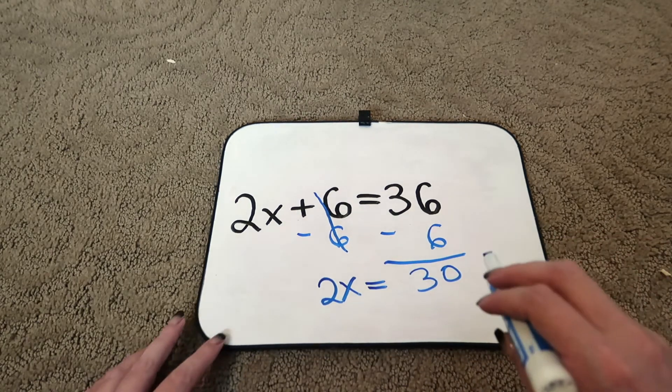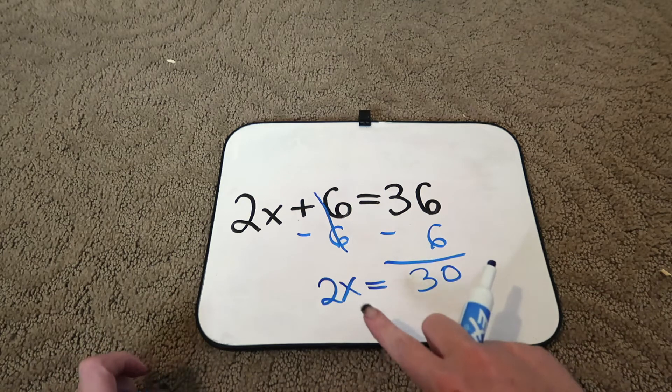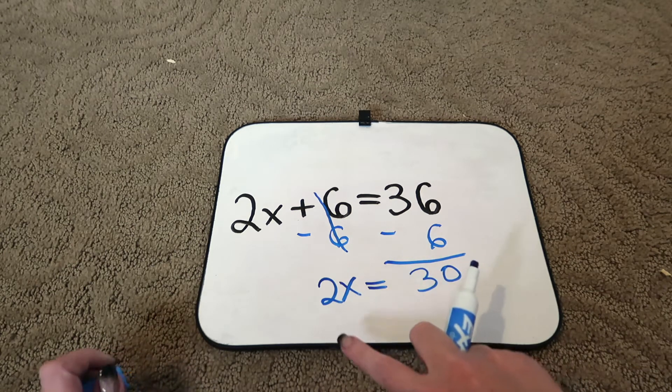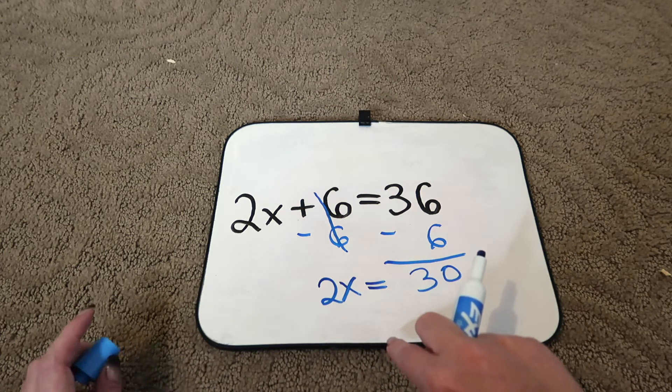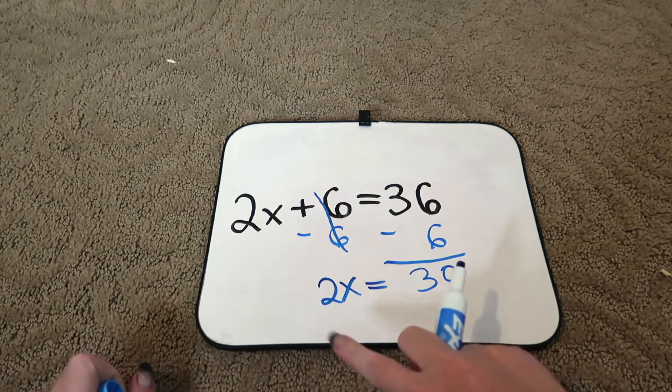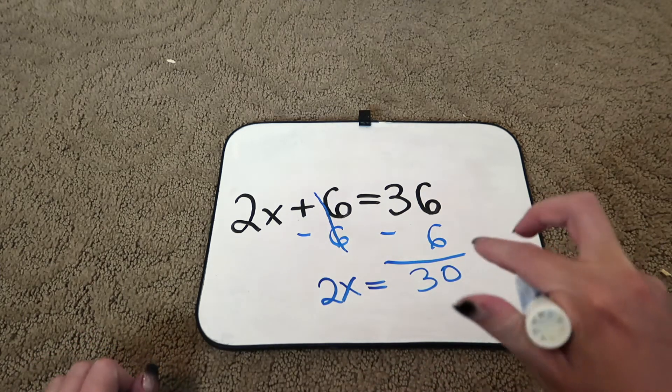And so now we have to get the x by itself. And since 2x means you're multiplying x by 2, we're wanting to do the opposite. So we're going to divide.